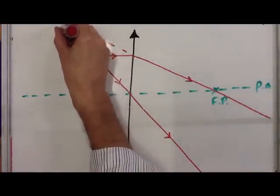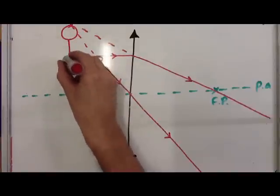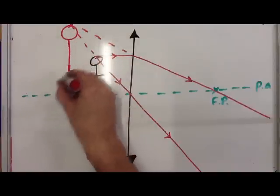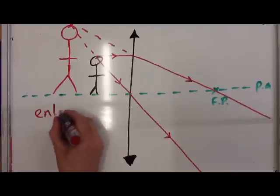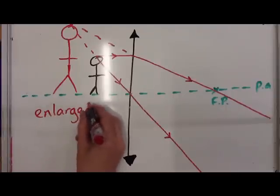We've noticed they cross here, and what we'd end up with is an image of our person here. This image is enlarged or magnified.